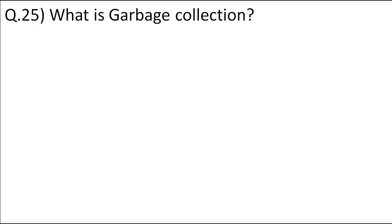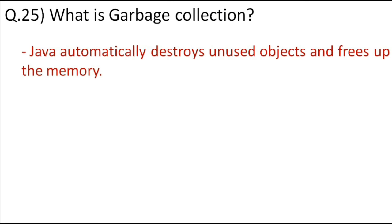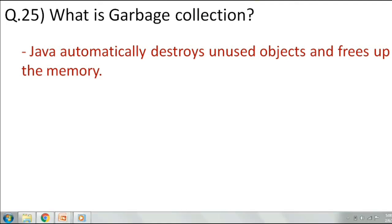What is garbage collection? Garbage collection is the process of destroying unused objects to free up memory. When the compiler runs the code and finds an unused object, it automatically destroys it and frees up memory. This process is called garbage collection in Java. So these were the 25 core Java interview questions.